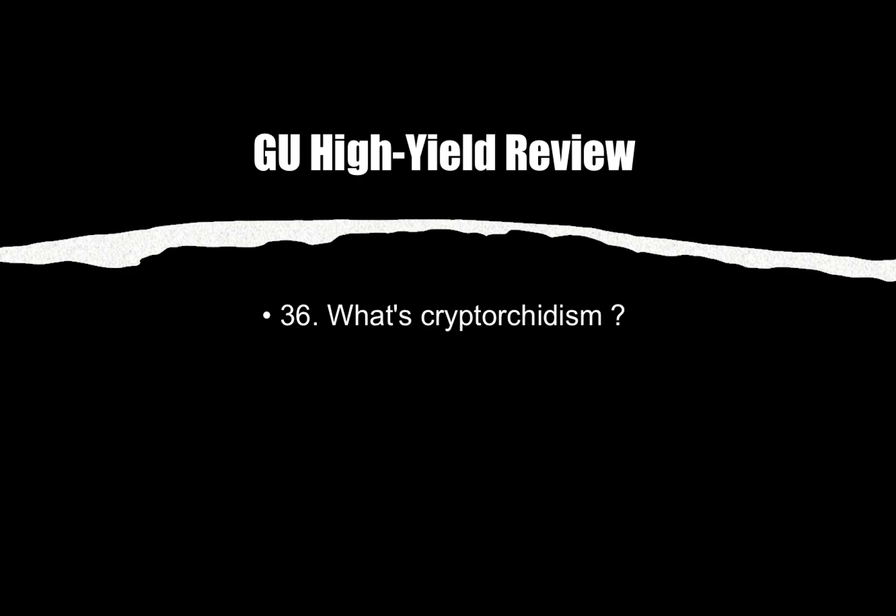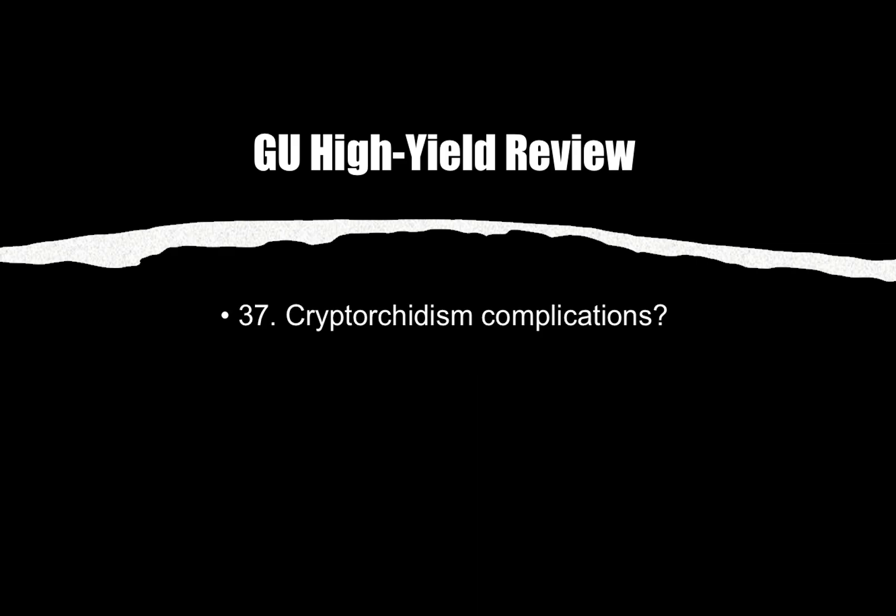Number thirty-six: What is cryptorchidism? Cryptorchidism is undescended testes. If you see undescended testes, think cryptorchidism. This condition can lead to the complication of testicular cancer.